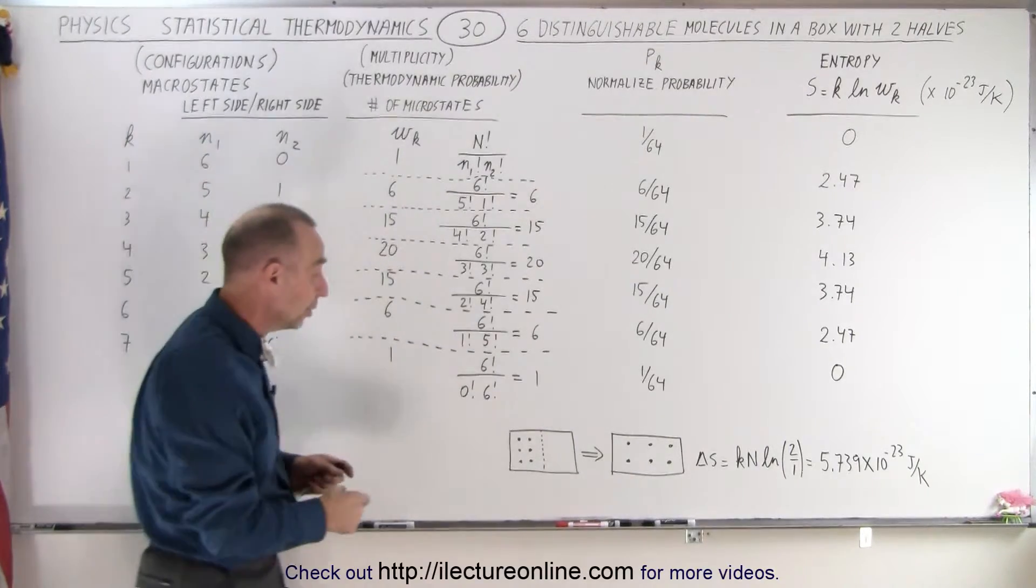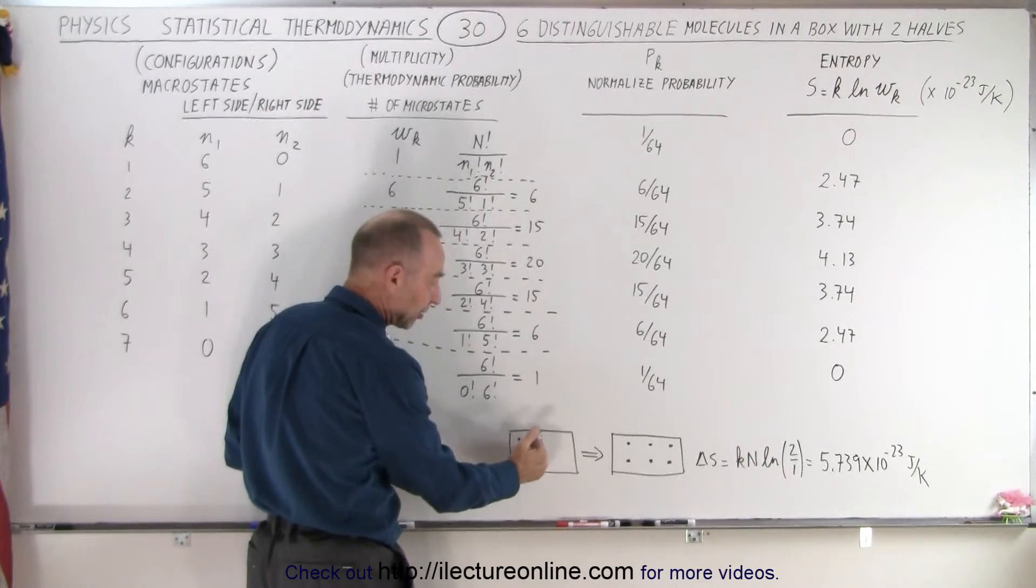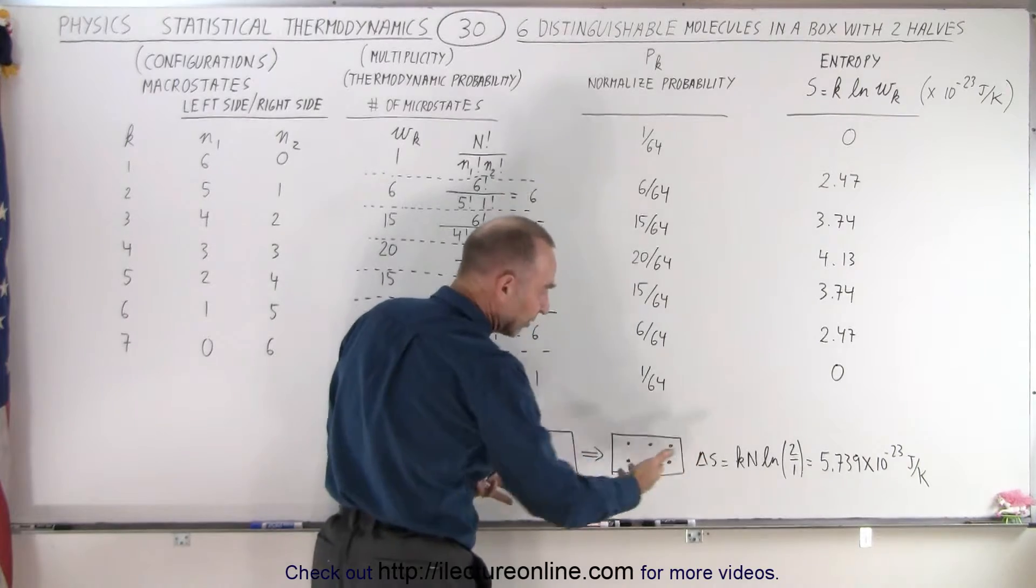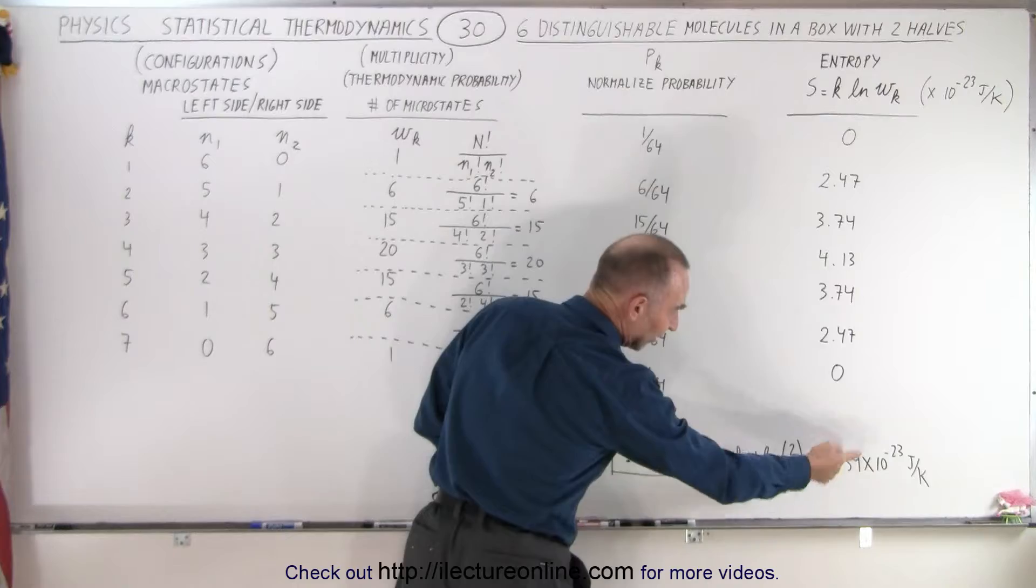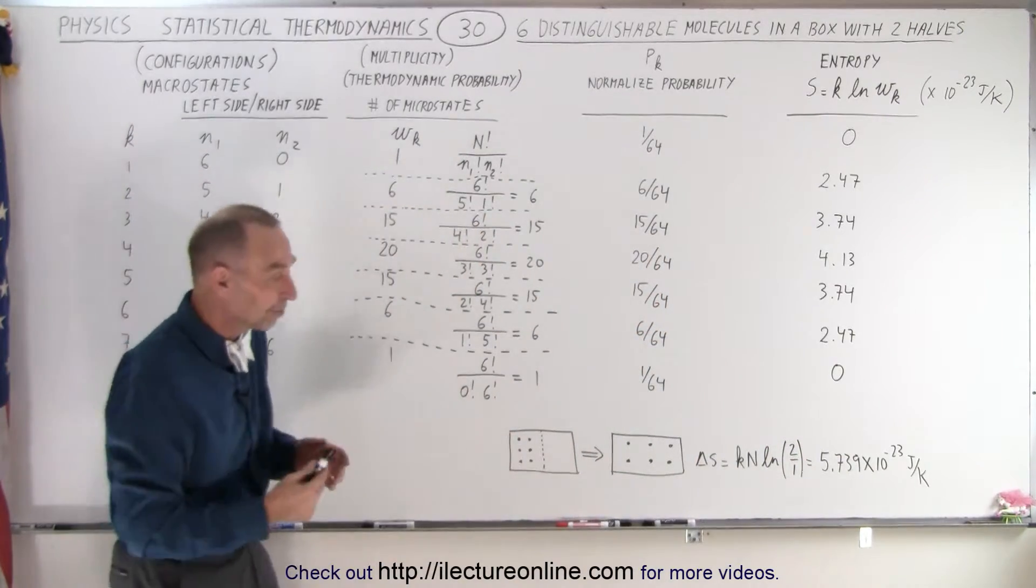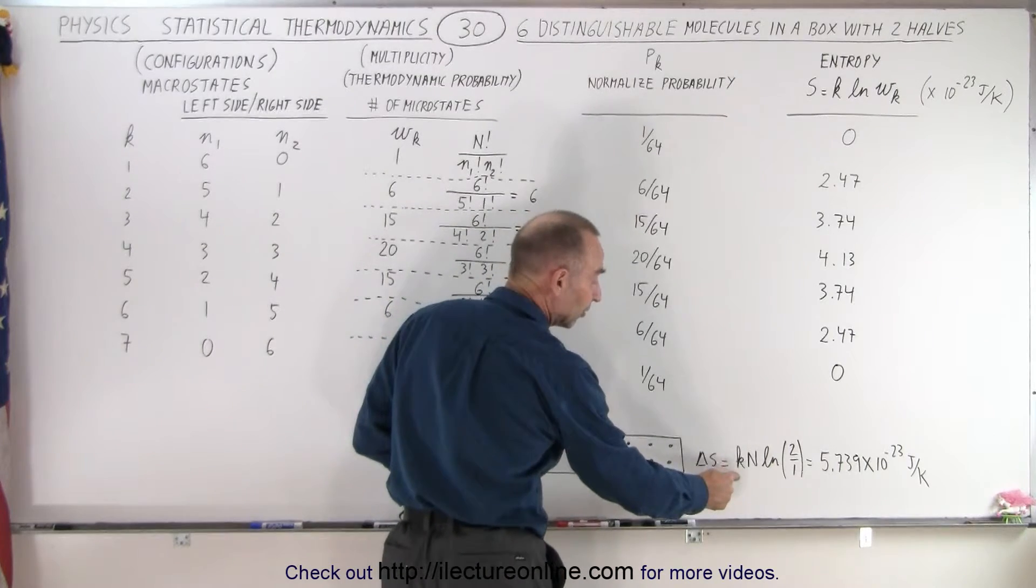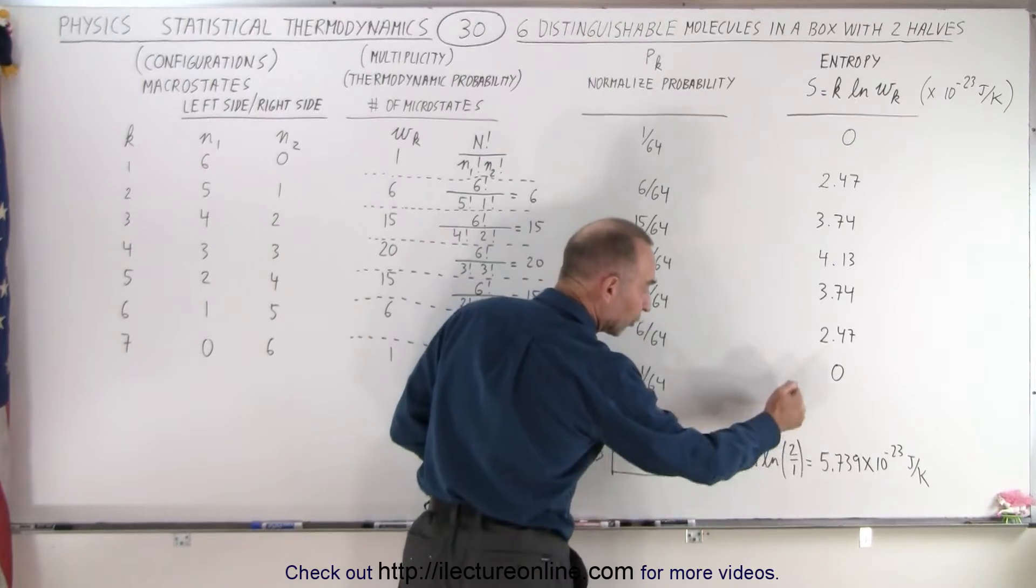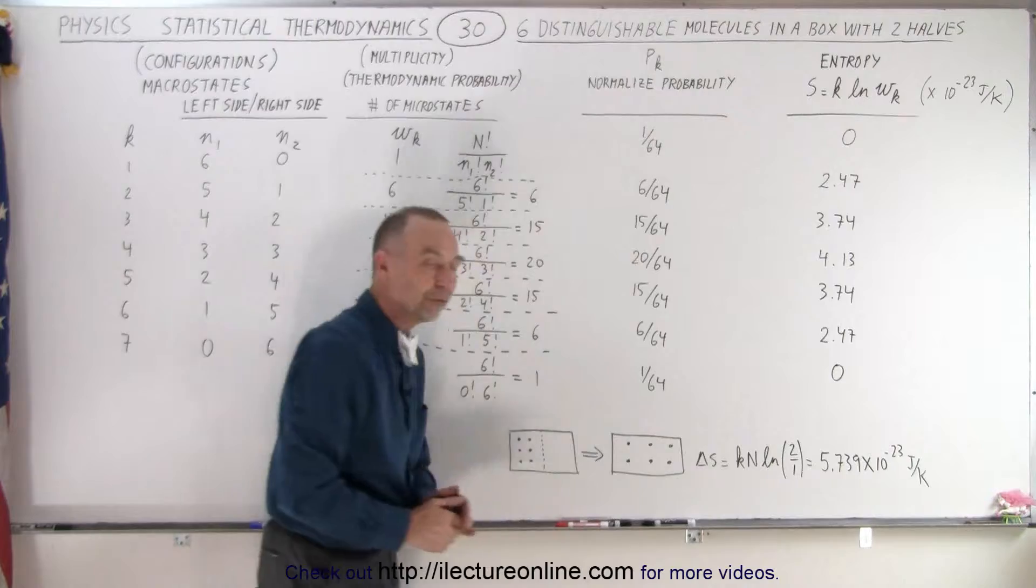So in the previous video we had a situation where we said we have the six molecules on one half of the box and then when they transition to a state where they're distributed throughout the entire box, the change in entropy was equal to 5.739 times 10 to the minus 23 joules per Kelvin. We got that from the equation where the change in entropy is equal to the Boltzmann's constant times the number of molecules times the natural log of the ratio of the volumes going from half the volume to the full volume.